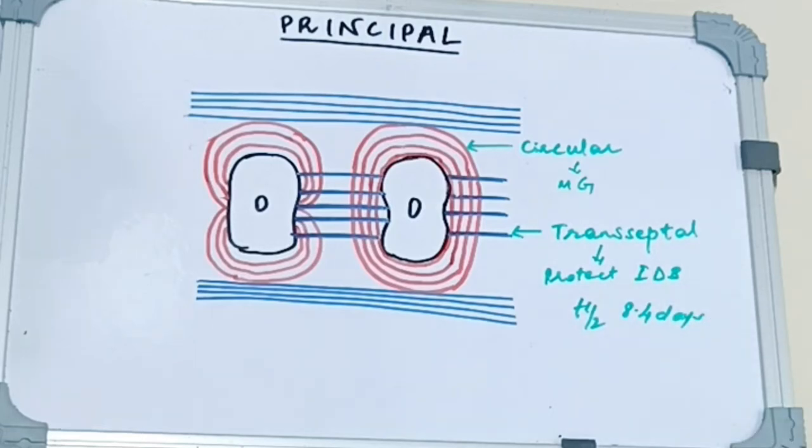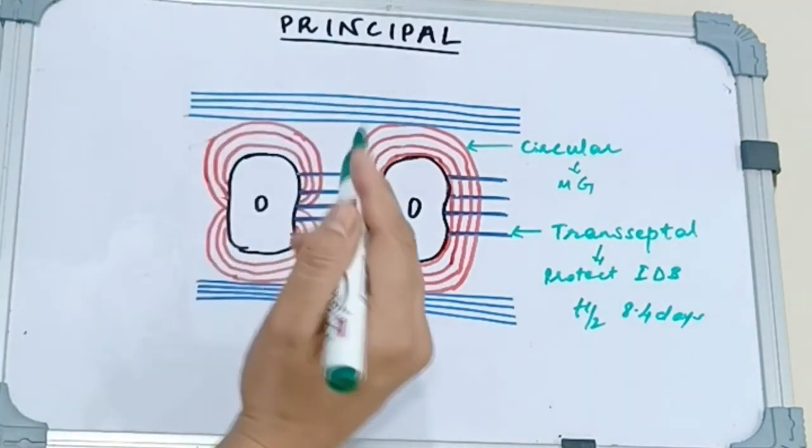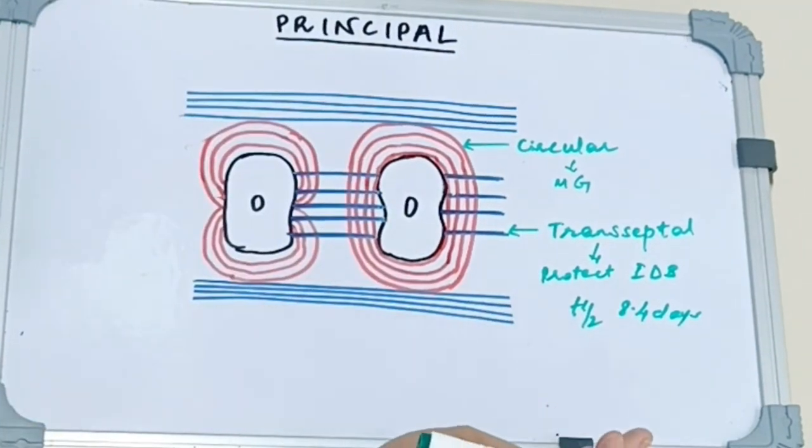So this was all about principal fibers. So with a quick recap here, we have five types of principal fibers: the dentogingival, alveologingival, dentoperiosteal, transseptal and circular.